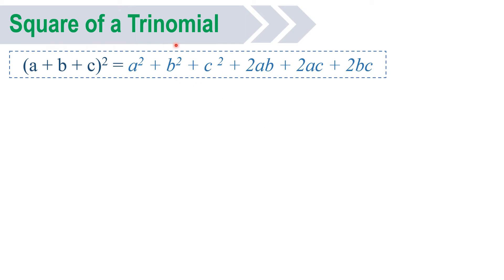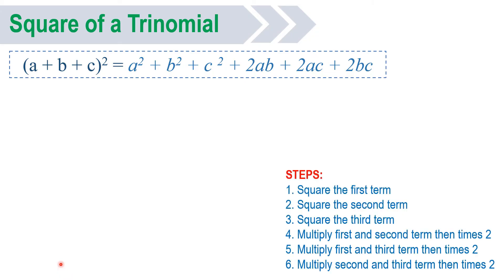Square of a trinomial. For example, a plus b plus c — that is a trinomial — raised to 2, so we call it square of a trinomial. And to solve for this, you just have to follow these steps.